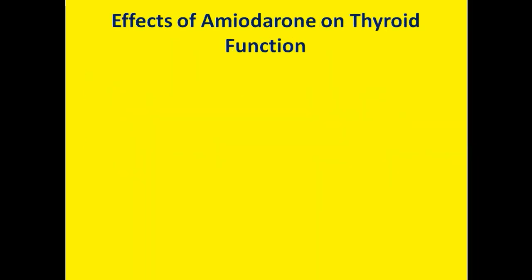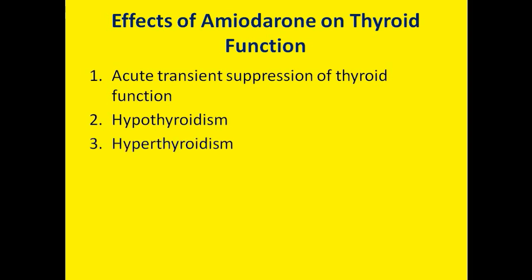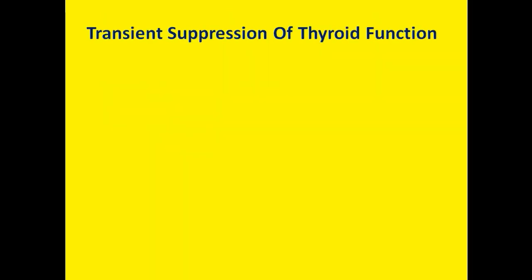The effects of amiodarone on thyroid function include: acute transient suppression of thyroid function, hypothyroidism, and hyperthyroidism. Let's talk about each briefly, starting with the transient suppression of thyroid function.